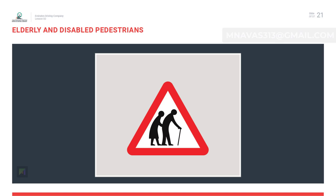Elderly and disabled pedestrians: being inside a car, the shell or body of the car protects us. However, pedestrians, children, and cyclists are unprotected road users. It is our responsibility to protect them — show respect to disabled and elderly people.